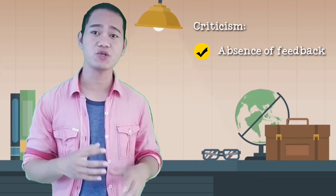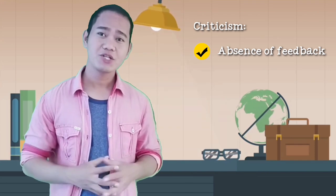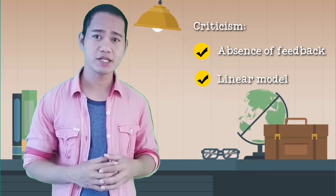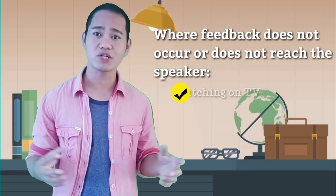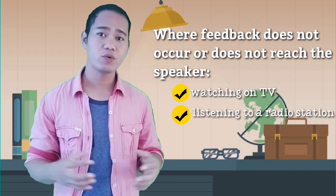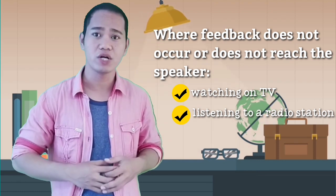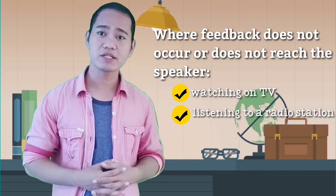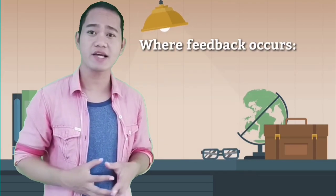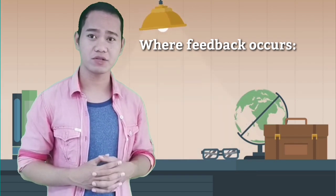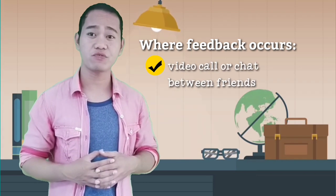Just like that of Aristotle's model, this model of communication is also subject to a lot of criticisms. One of which is the absence of one essential element in the communication process: the feedback. Shannon Weaver model of communication is a linear model. That means it illustrates communication as a one-way process. Well, sufficient to say that in some instances of communication, feedback does not occur or does not reach the speaker, like when we are watching television or listening to a radio station where we don't tend to let people talking on the television or the radio station know what we are thinking. That means we simply watch or listen to the show. In most cases, however, where communication uses a machine or a device like a smartphone or a laptop, feedback occurs. For example, a video call or chat between friends or a reply email.